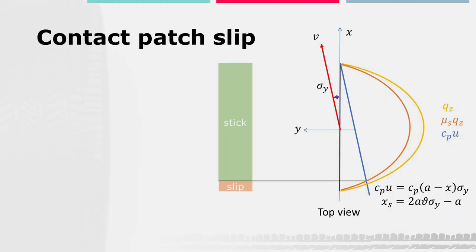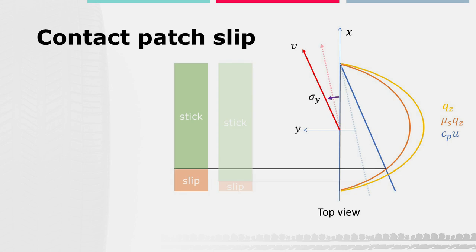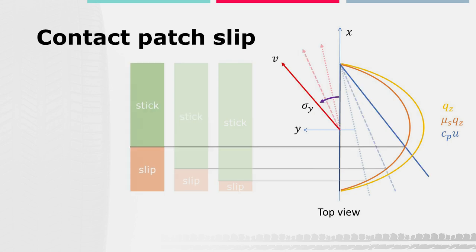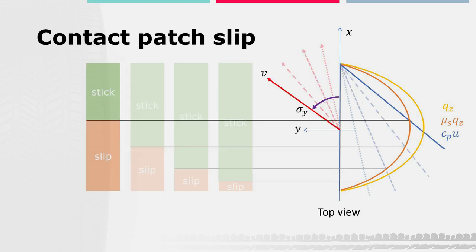For very small slips, the contact patch shows almost full adherence conditions, only brushes at the exit of the contact patch are sliding. Increasing the slip, the sticking region reduces in favor of the slipping region.